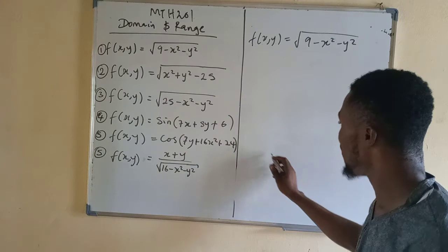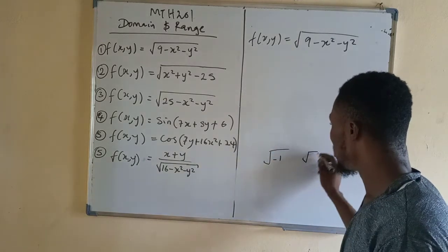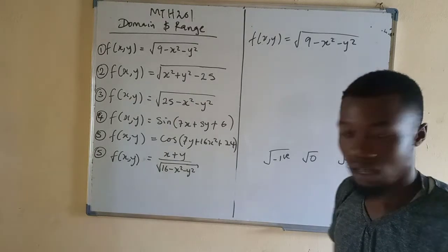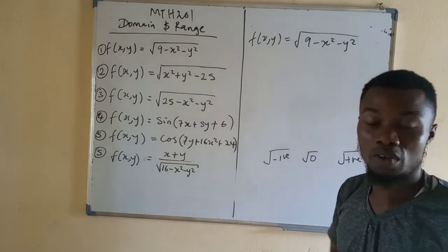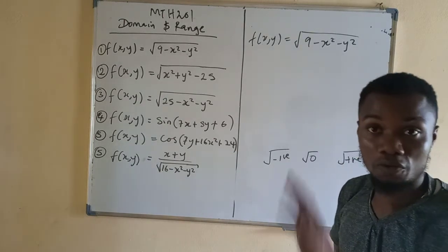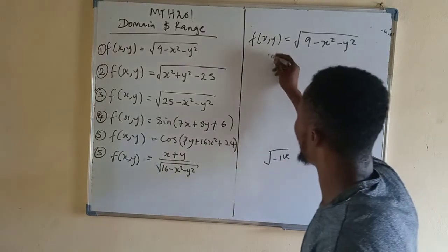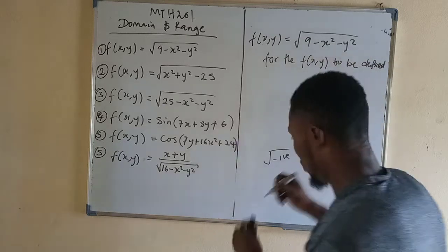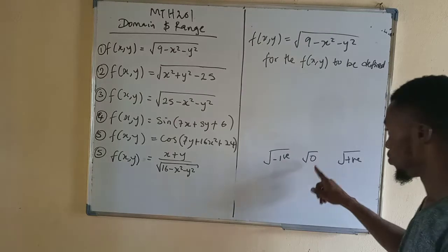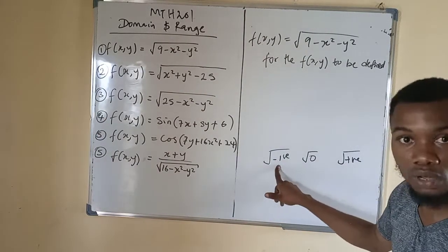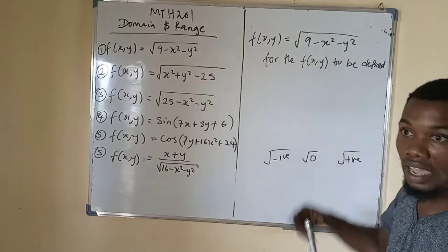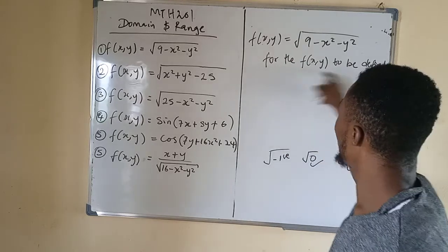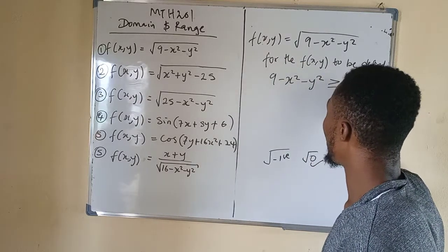For every square root, a square root cannot contain a negative number. A square root can contain 0, and a square root can contain positive numbers. A square root of any negative number is an error. So for the function f(x,y) to be defined, the content of the square root can be 0 or positive — but never negative. Therefore, 9 minus x squared minus y squared must be greater than or equal to 0.